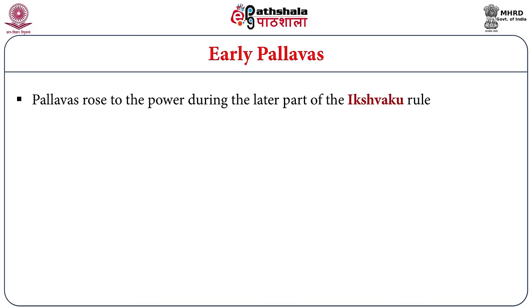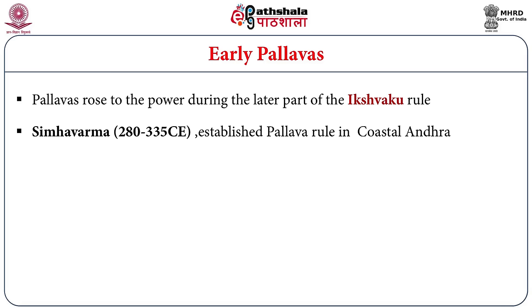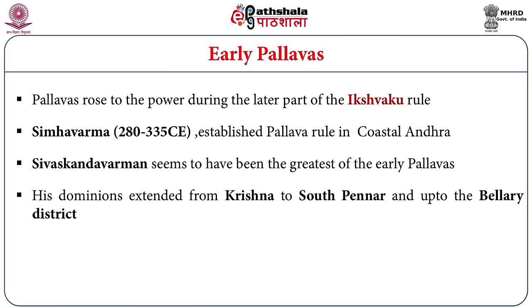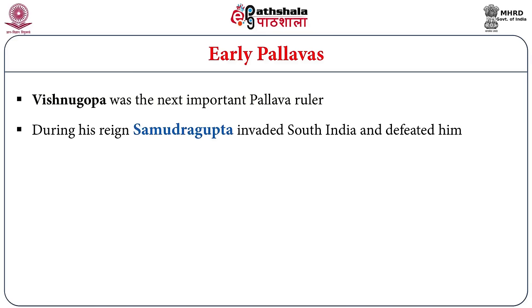Regarding the early Pallavas, they rose to power during the later part of the Ichwaku rule. Simha Varma, who was the earliest family member of this dynasty, established Pallava rule in coastal Andhra by defeating the Ichwakos. Sivaskandha Varma seems to be the greatest of the early Pallavas. His dominions extended from Krishna to South Panar and up to Balaar district. He had the title of Dharma Maharaja and performed Vedic sacrifices, indicating that during his time they assumed imperial status even in the beginning of the 4th century. Vishnu Goppa was the next important ruler. During his time as Yuvaraja, Samudragupta invaded and the Pallavas suffered disturbance because of that invasion.